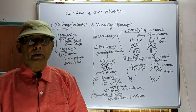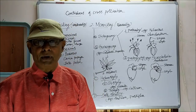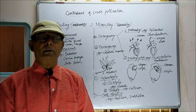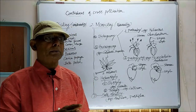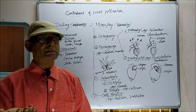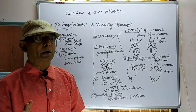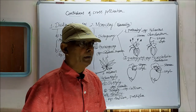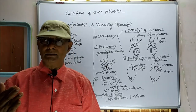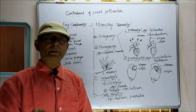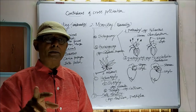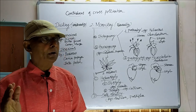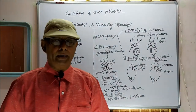What is dicogamy? When a plant produces bisexual flowers, but the anther and the stigma mature at different times — the anther matures first in some cases, or in some cases the stigma matures first — in order to avoid self-pollination, that condition is called dicogamy. In dicogamy, the bisexual flower contains both androecium and gynoecium, but they mature at two different times. That is, anther and stigma mature at two different times.